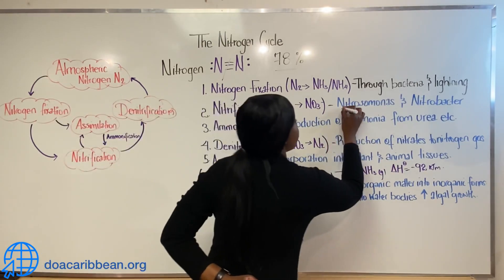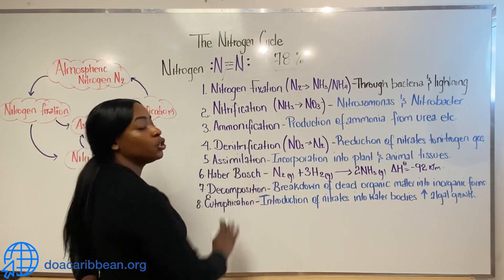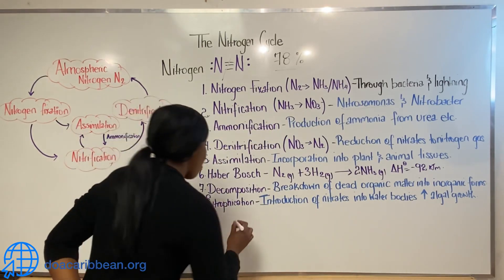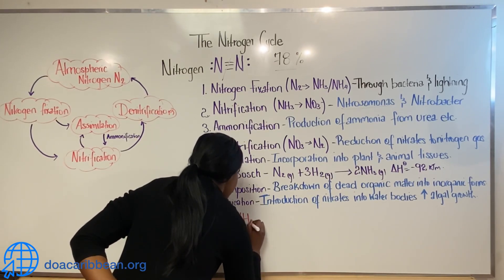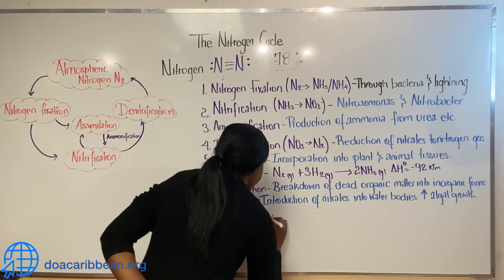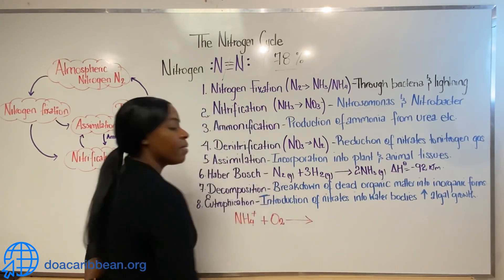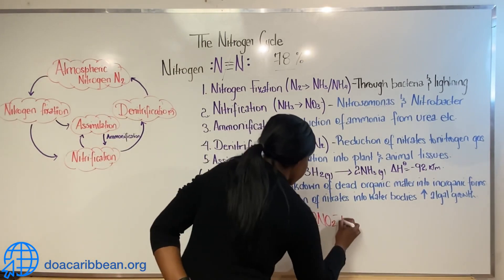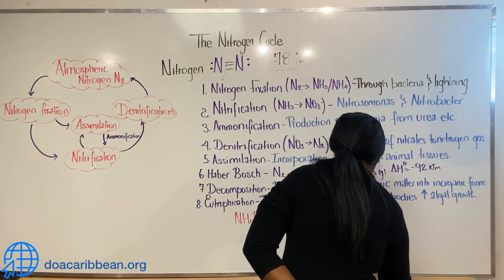The Nitrosomonas convert ammonia to nitrites. The ammonium ion NH4+ is combined with oxygen O2 to form nitrites NO2⁻ and water.